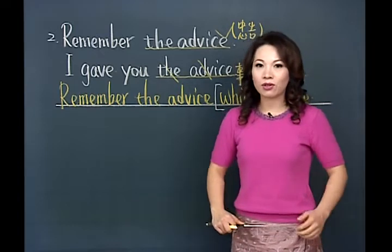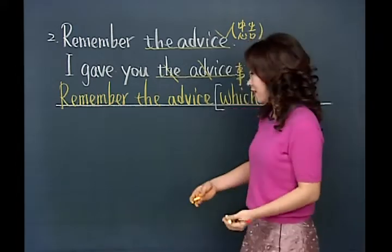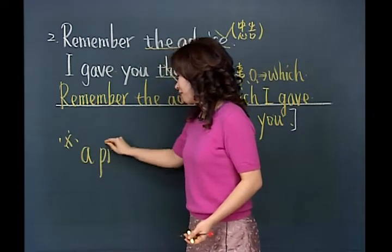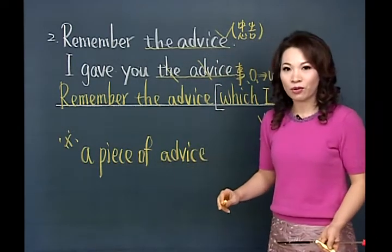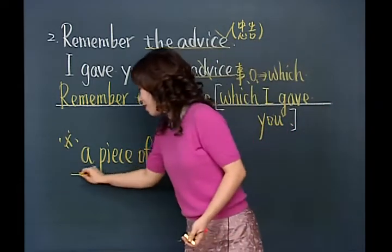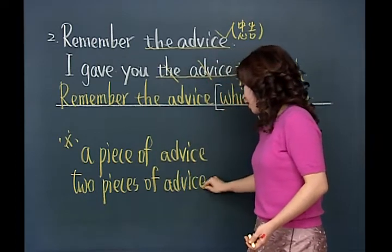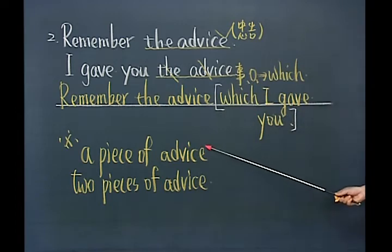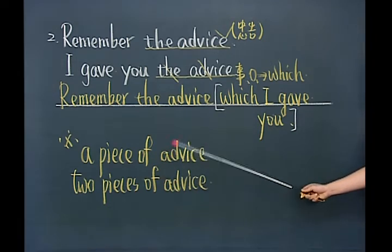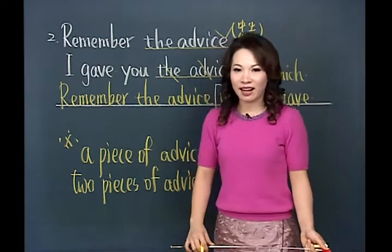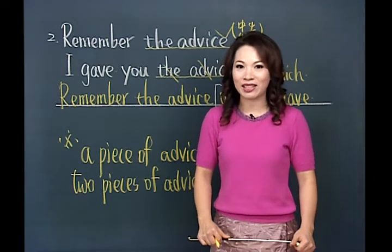特别注意：advice是不可数名词，不能加s。如果要表示数量，要借助单位：a piece of advice表示一则忠告，两则忠告是two pieces of advice。不可数名词要表现数量时，要借助单位词。好了，这个小时很快又过去了，还有更多关系代名词的重点等着你，待会见，拜拜！